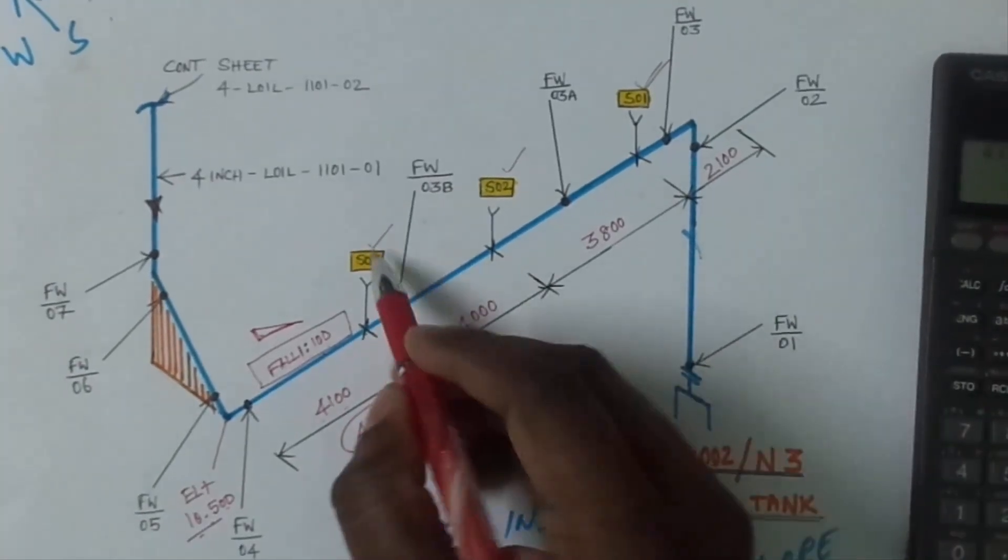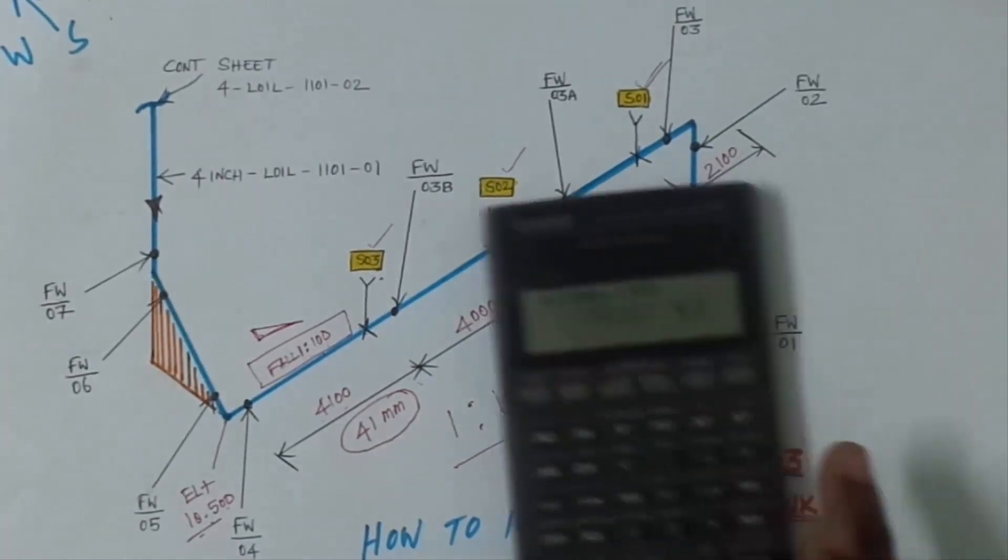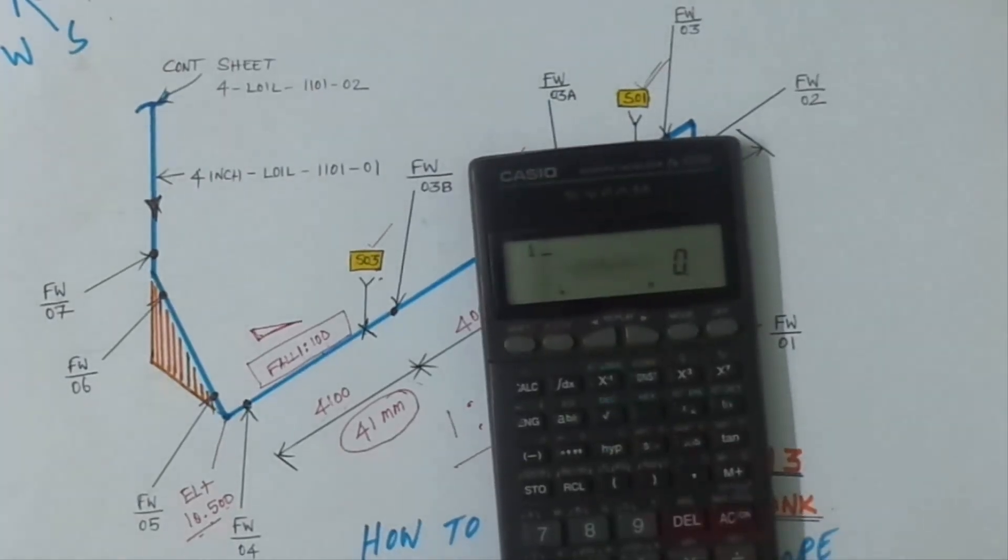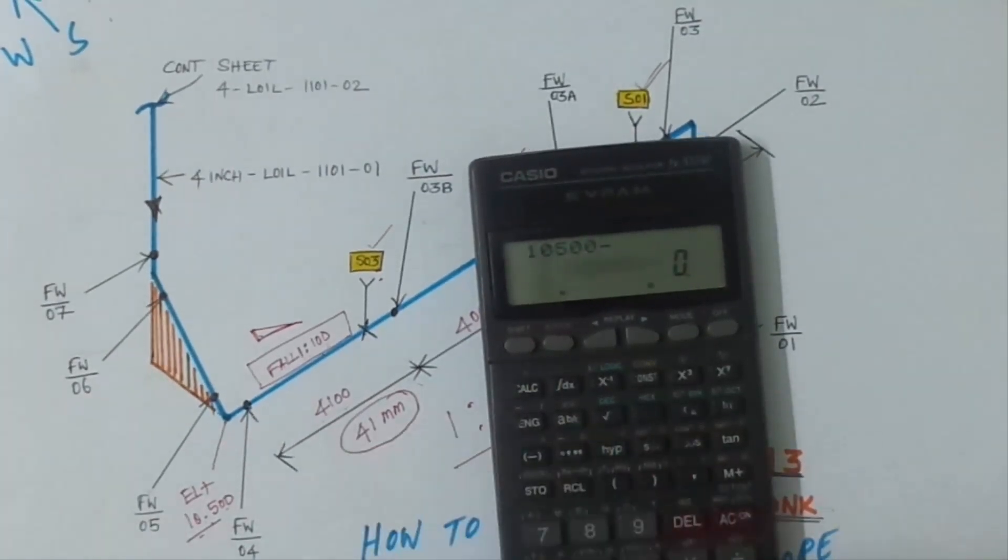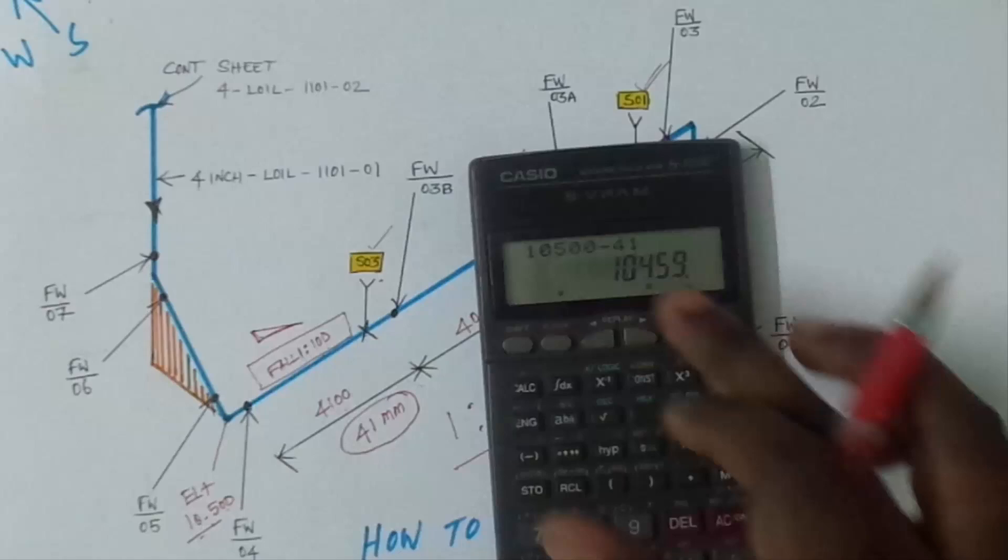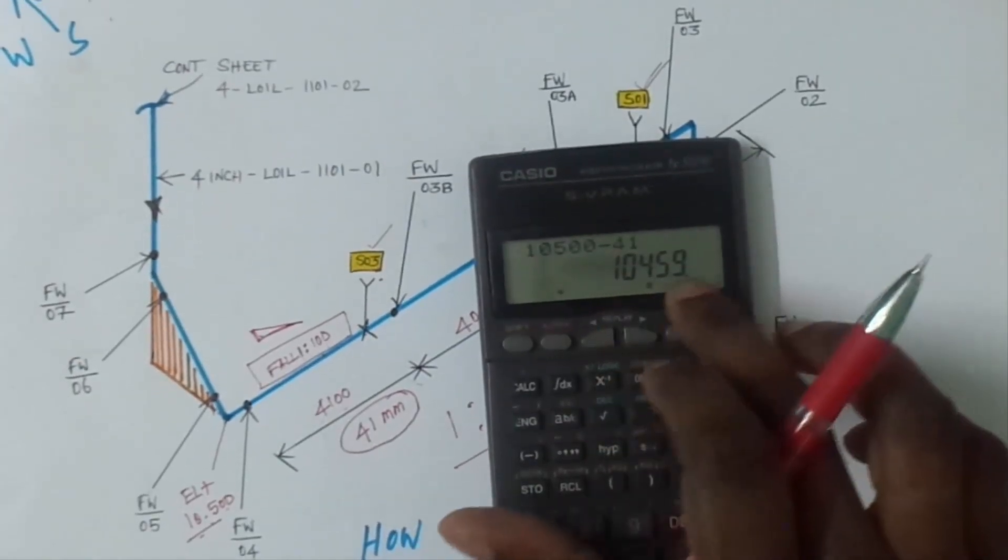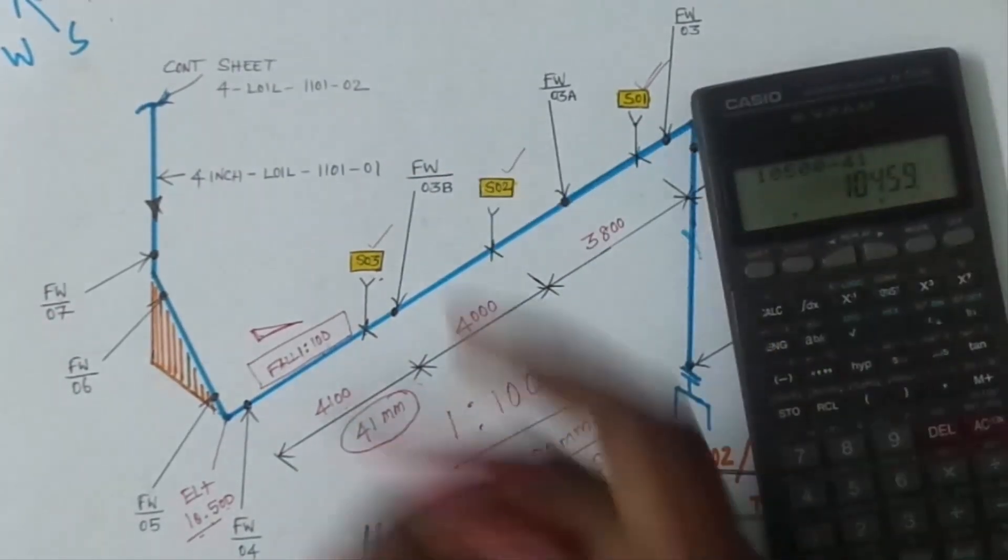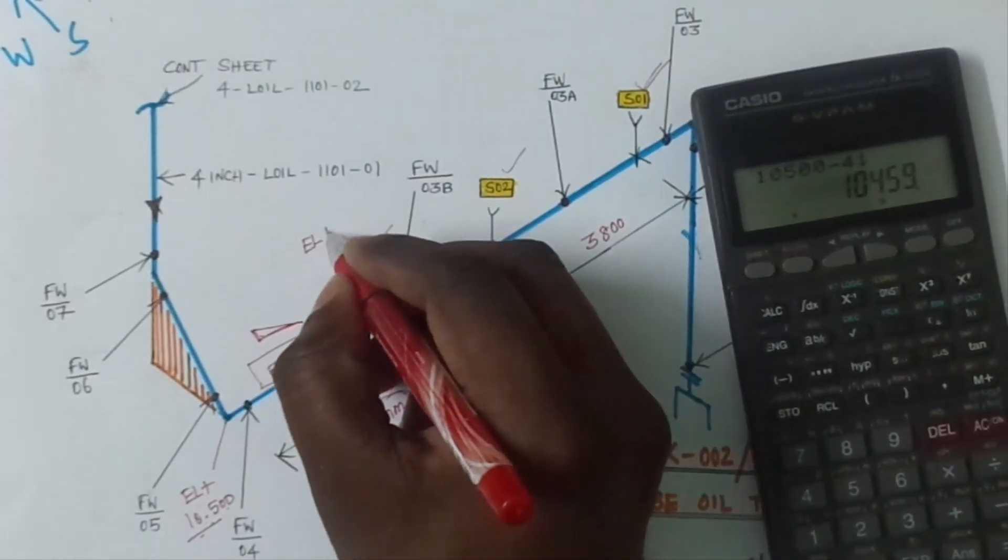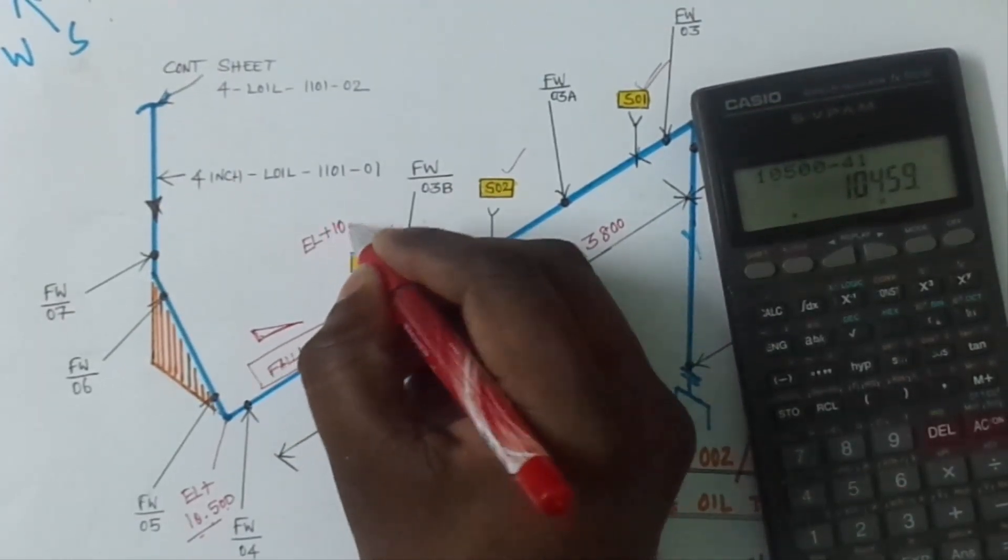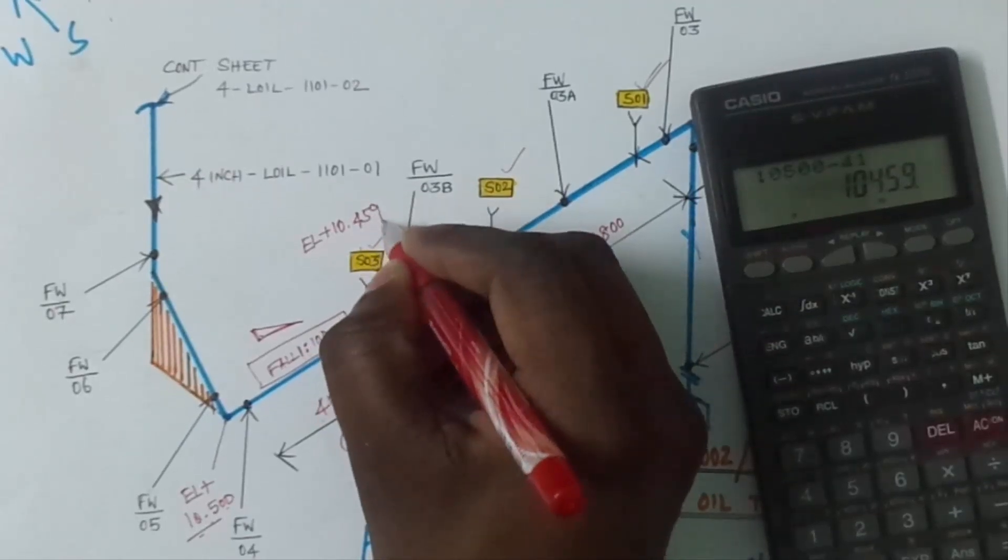So here elevation 10 meter 500. This will go, after that we have to minus 41 mm. So this elevation is 10 meter 459. This support number 3 elevation is 10 meter 459 mm.